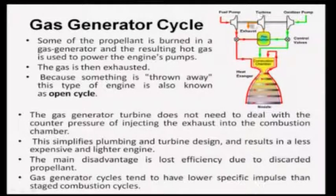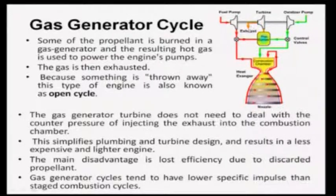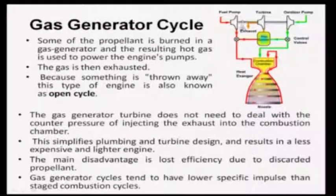Because some gas is exhausted overboard rather than through the nozzle, the efficiency of the system is lower. The gas generator turbine does not need to deal with the counter-pressure of injecting exhaust into the combustion chamber, which simplifies plumbing and turbine design and results in a less expensive and lighter engine. The main disadvantage is the lost efficiency from discarded gas. Gas generator cycles tend to have lower specific impulse than staged combustion cycles.